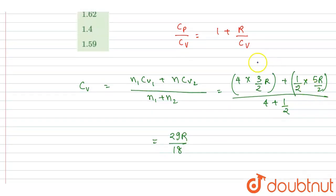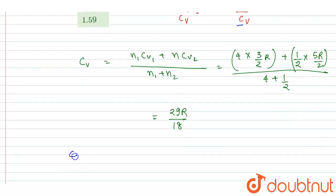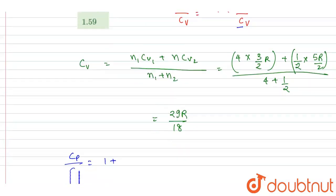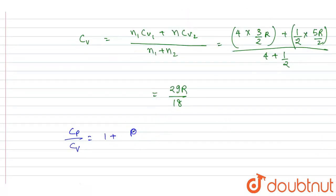Now if you see here, you can put the value of Cv in this expression to get the Cp by Cv ratio. 1 plus R by Cv, so R by Cv is this. So basically we got this is 18 by 29.